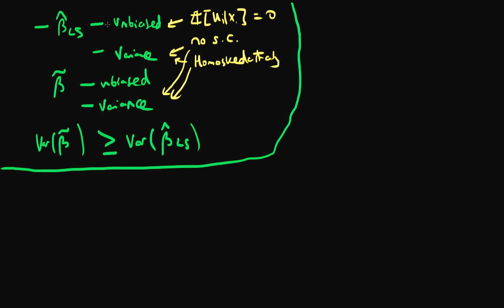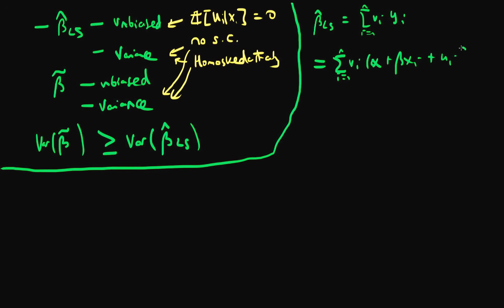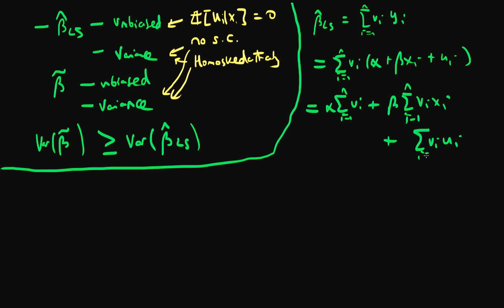In doing so we will have proved that least squares is BLUE, because there are no other linear unbiased estimators with a variance less than least squares. So that's what we're doing in this video: deriving conditions under which least squares estimates of the slope parameter beta are unbiased. To do that, let's write down what we had at the end of last video — that beta-hat least squares equals the sum of v_i y_i across the sample. Using the population process I can expand this as the sum from i=1 to n of v_i times (alpha + beta*x_i + u_i).